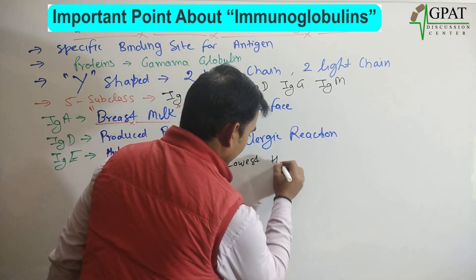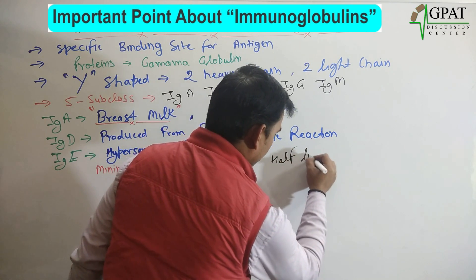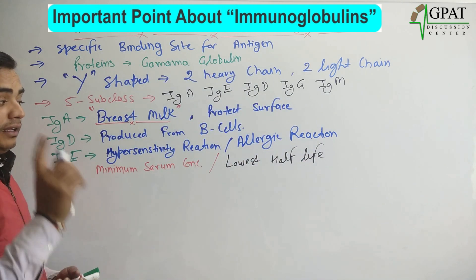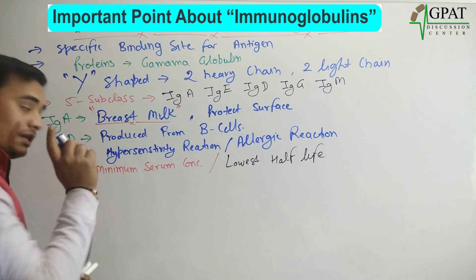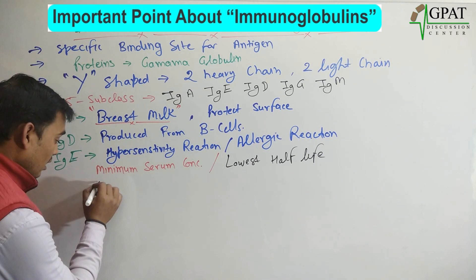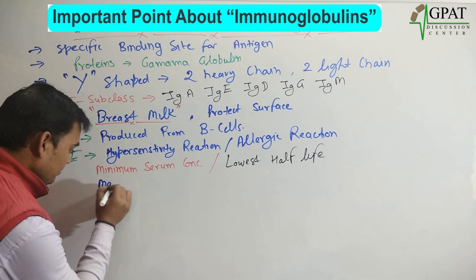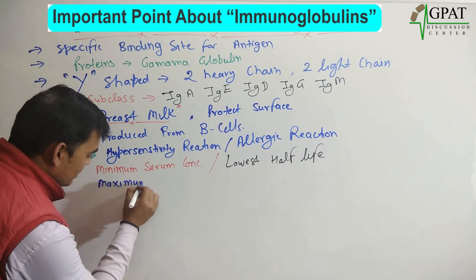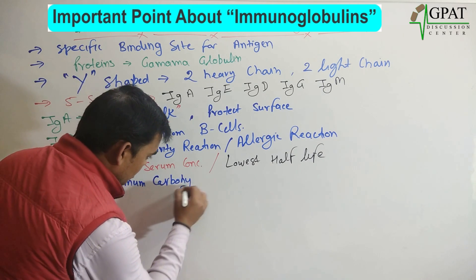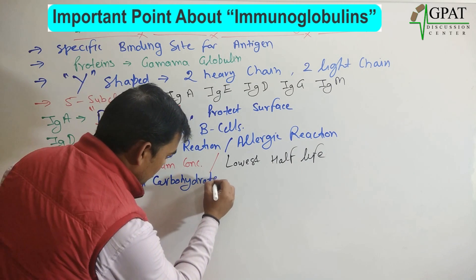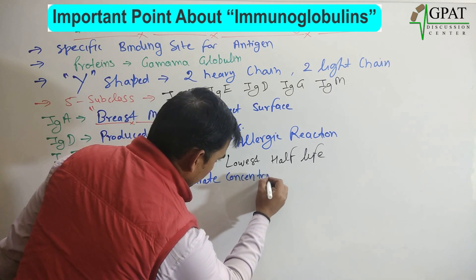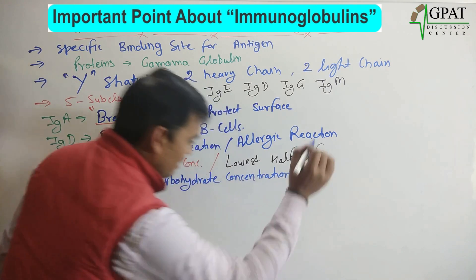The half-life of IgE is also low — it has the lowest or minimum half-life. So minimum serum concentration and minimum half-life, but it has maximum carbohydrate concentration.